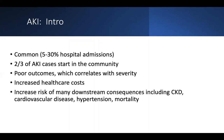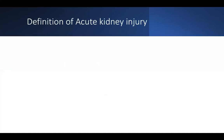Some of the downstream consequences — which I'll go over a few times during this lecture — are chronic kidney disease and end-stage renal disease, cardiovascular disease, hypertension, and mortality. The definition is an abrupt decline in kidney function over days to weeks, as opposed to chronic kidney disease, which is over at least three months.